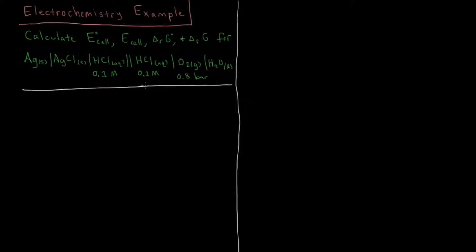The first thing we have to do is figure out what the half-cells are. In this diagram we have our anode on the left and our cathode on the right — the anode being where oxidation occurs, and the cathode being where reduction occurs.